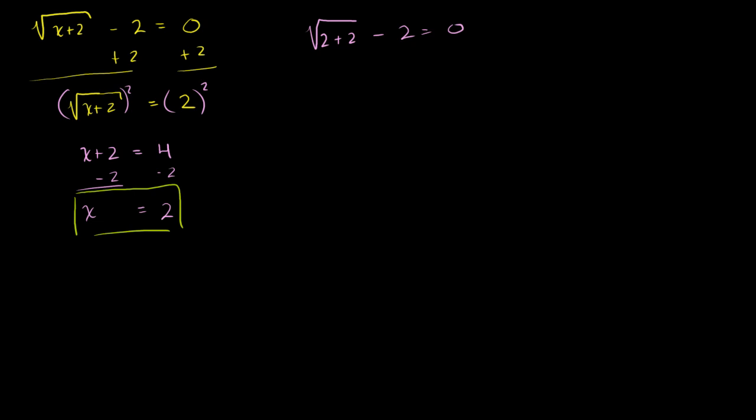Let's do one that doesn't involve a square root. Let's do one with a higher power root. Let's say we have the fourth root of x squared minus 9 is equal to 2.